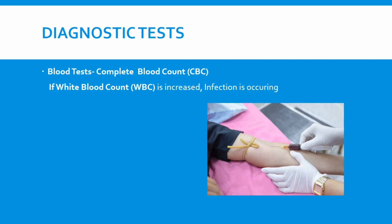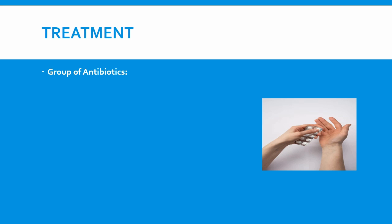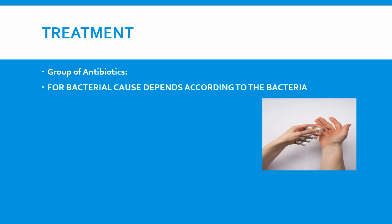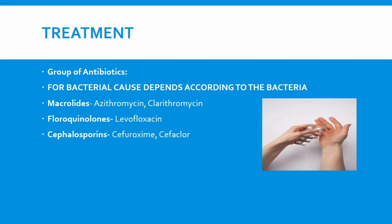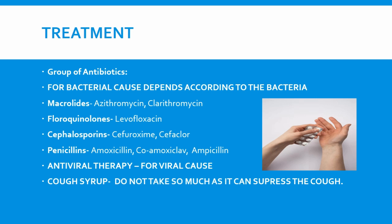Now we are going to discuss the treatment of pneumonia. We can give antibiotics if bacteria is the cause; the choice of antibiotic will depend upon the specific bacteria responsible. We can give macrolides like azithromycin and clarithromycin, fluoroquinolones like levofloxacin, cephalosporins like cefuroxime and cephalor, and penicillins like amoxicillin, co-amoxiclav, and ampicillin. If the cause is a virus, antiviral therapy is available for viruses like SARS and MERS, though their activity is not fully established. We can also give cough syrup, but do not overuse it as it can suppress the cough.